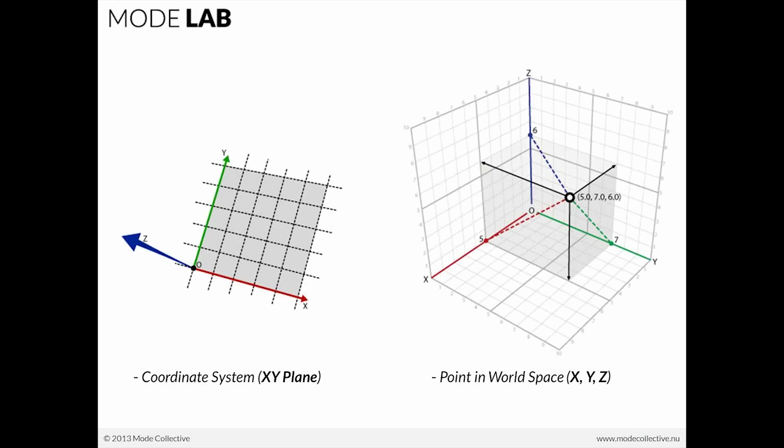In the case of Cartesian points, or the points that you would be using typically in Grasshopper, you're referencing a coordinate system which is based upon, in this case on the left, the XY plane. That XY plane and the points that reside on it are really constructed using the coordinate system of the world, what we refer to as world space or XYZ space.